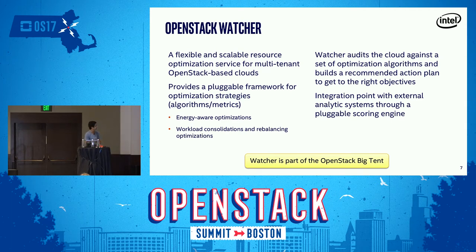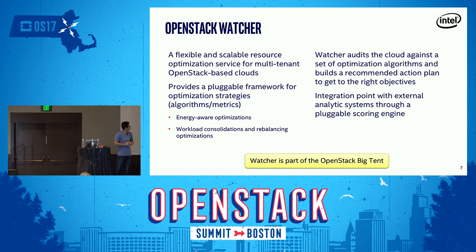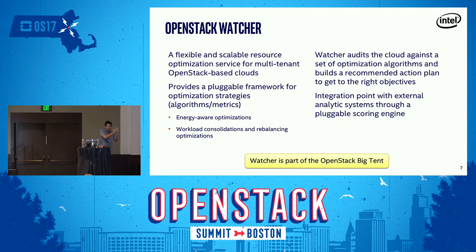OpenStack Watcher is a flexible resource optimization service for your OpenStack-based clouds — a service used to optimize your resources in an automatic fashion. What Watcher does is it audits your cloud against a set of predefined optimization algorithms, and based on that, it comes up with strategies which it presents to a cloud admin, who has the power to apply them directly using the Watcher CLI. As an OpenStack admin, all you need to do is set a goal, map that goal to a strategy, and just leave it — Watcher does behind-the-scenes jobs to achieve that goal using the rules defined in those strategies.